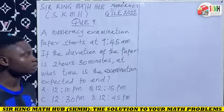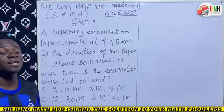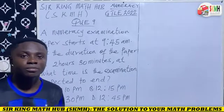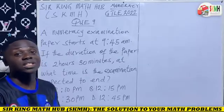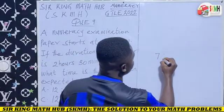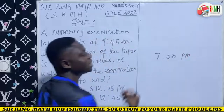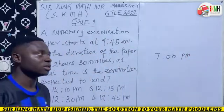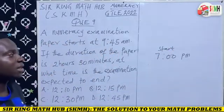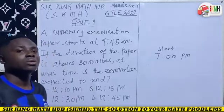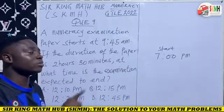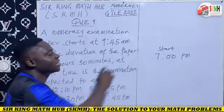We have been given the start time and the duration of the paper, so how do we calculate the time the examination is expected to end? Let's look at this scenario: say you went to a cinema to watch a movie, and the movie started at exactly seven o'clock PM. You are told that this movie will end in the next two hours, meaning the duration of the movie is two hours. So the question is: at what time will the movie end?